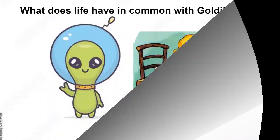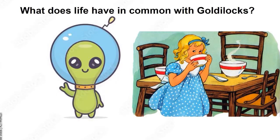But first we want to start with a very important question. What does life have in common with Goldilocks from Goldilocks and the Three Bears? Well, just like Goldilocks, different places in the solar system are too hot, too cold, and most importantly, some are just right for a habitable zone. A habitable zone is sometimes called a Goldilocks zone for that very reason.